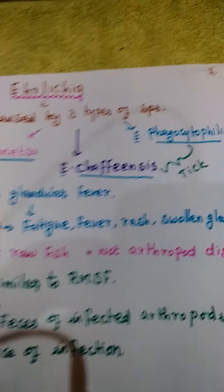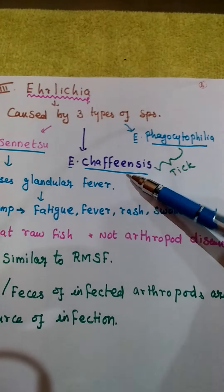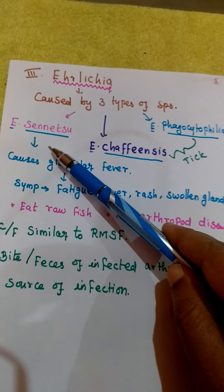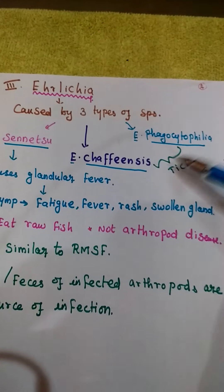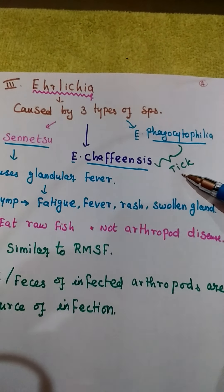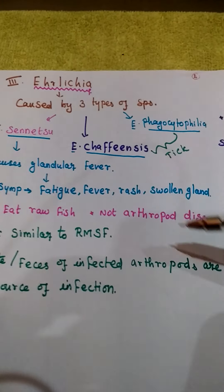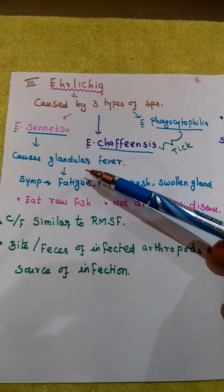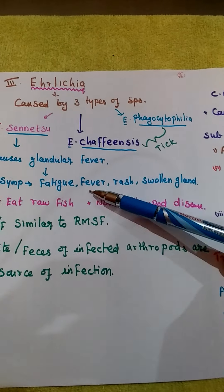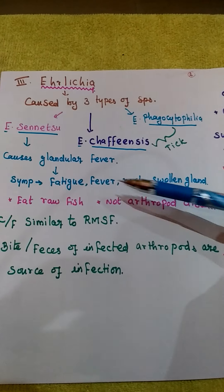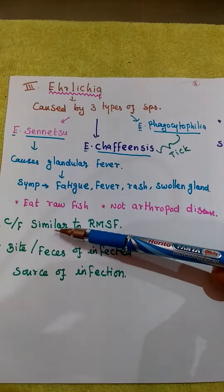Ehrlichia is caused by three different species: Ehrlichia sennetsu, and Ehrlichia phagocytophilia. Two are caused by tick bite. Ehrlichia sennetsu is considered a foodborne infection, not arthropod-borne. Symptoms include fatigue, fever, rashes, and swollen glands. Clinical features are similar to Rocky Mountain spotted fever.